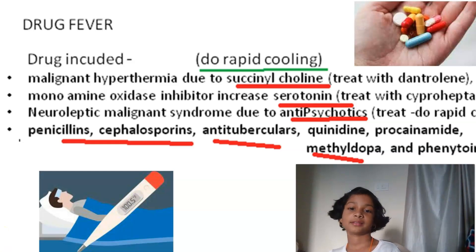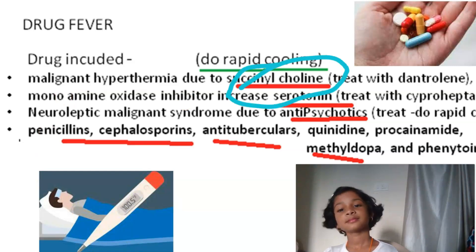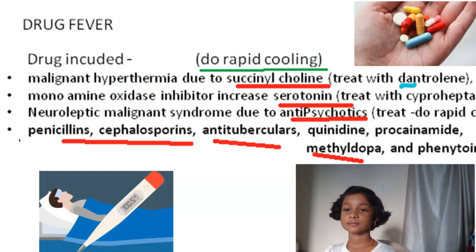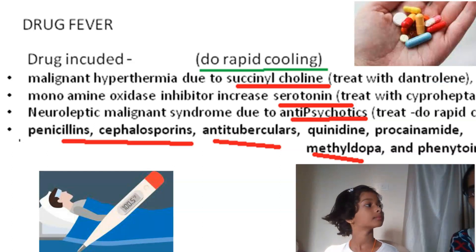Succinylcholine — succinylcholine can lead to malignant hyperthermia. As written here, can you see? Succinylcholine leads to malignant hyperthermia. And how will you treat it? You will treat it by giving dantrolene. Yes, dantrolene — very good.